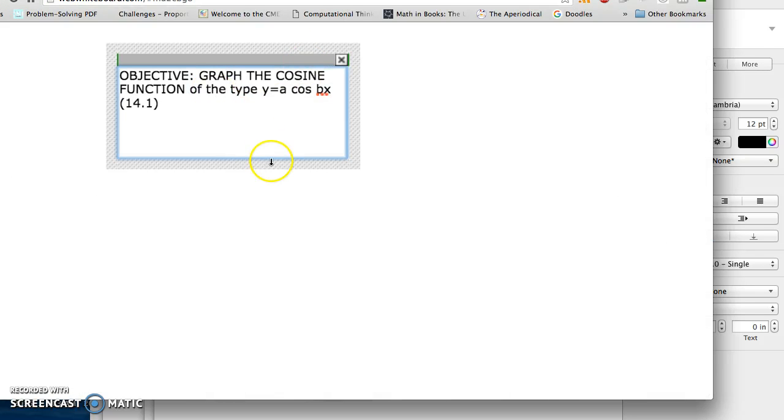Hello, my name is Mark Dittmer. I'm an Algebra 2 teacher at American Indian Public High School. This is a video on graphing the cosine function of the type y equals a times cosine of bx. A lot of this material can be found in section 14-1 of our textbook.